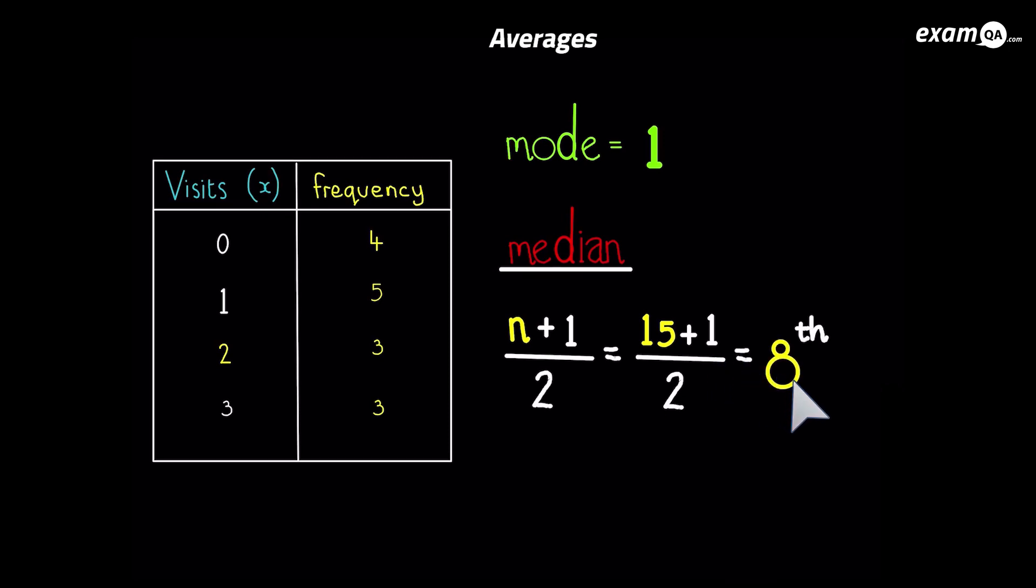So eight is not the median. Be careful about that. Eight is the number we look up. The eighth number is the median. So if you had a whole list of numbers, like we had earlier in order of numbers, it's telling you the eighth number is the median. However, we haven't got the numbers listed up. We've got them in a frequency table. So we're going to have to find it from the frequency table.